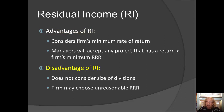However, residual income does have some disadvantages. One is that it does not directly consider the size of divisions — because it's a subtraction problem, not a ratio. However, the size of divisions is implicit in the calculation of the hurdle, since we multiply the required rate of return by the division's assets to determine the minimum income the division must generate.